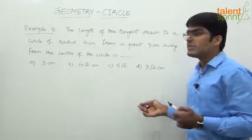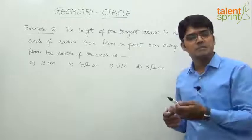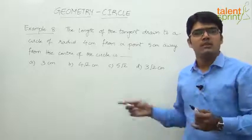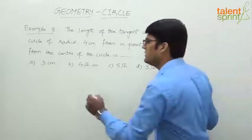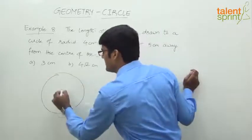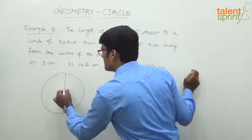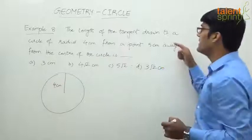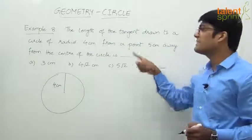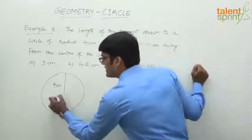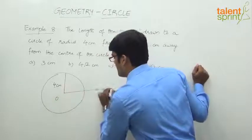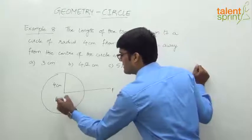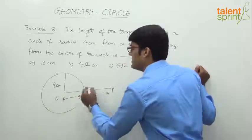You can either use the Pythagorean theorem to arrive at the answer like we have done in the previous question, or you can directly use the formula. What does it say? There is a circle with radius 4 centimeters, and we have to find out the length of a tangent drawn from a point that is 5 centimeters away from the center. This is the center of the circle, so this point P is 5 centimeters away from center.